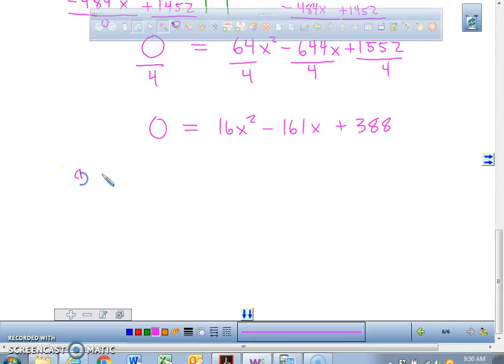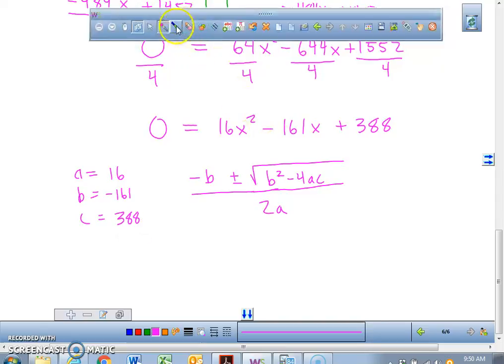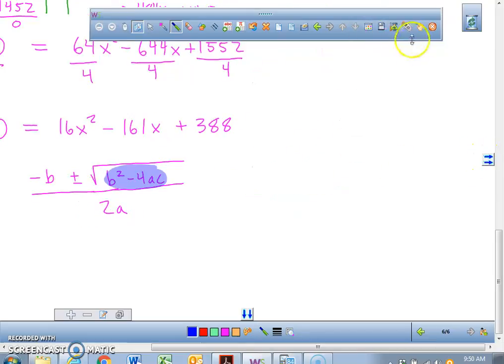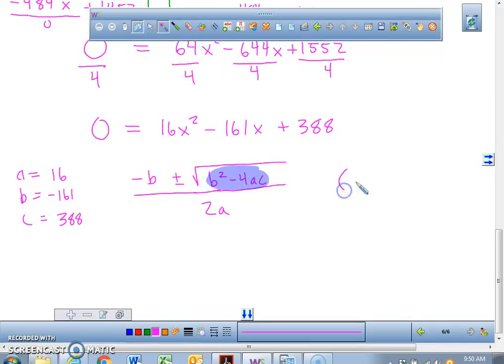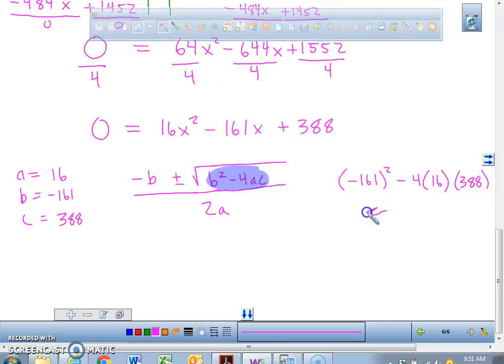By the way, my suggestion when you get to this, use the quadratic formula because the quadratic formula has one purpose only: it finds roots. Your A value is 16, your B value is negative 161, and your C value is 388. My suggestion is that you find your discriminant first.